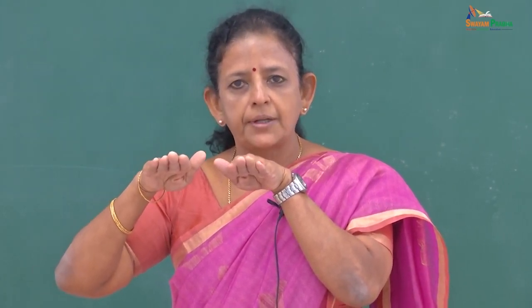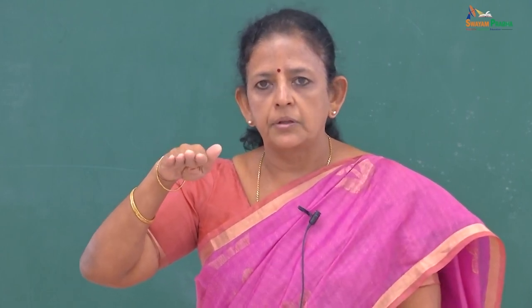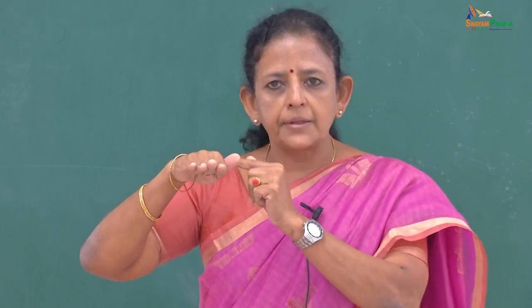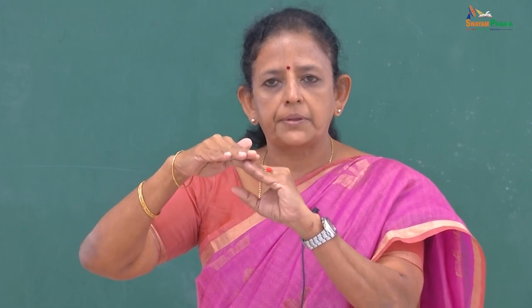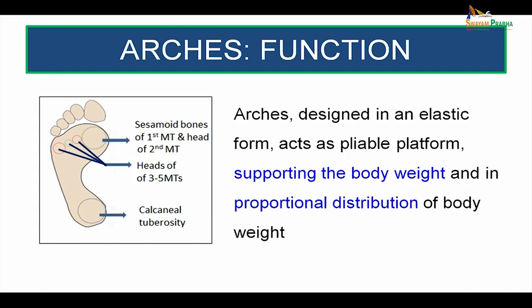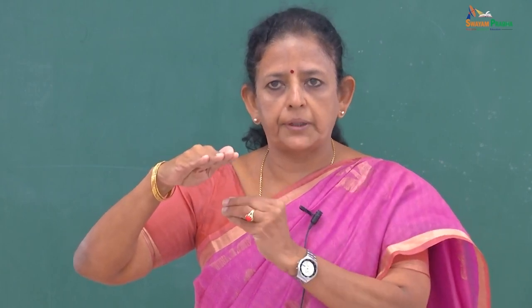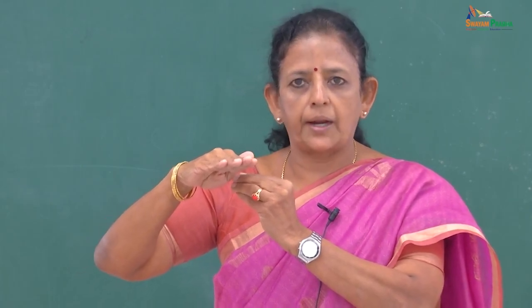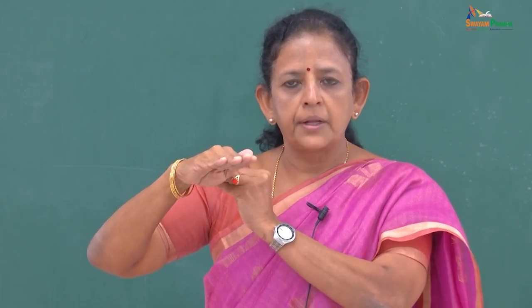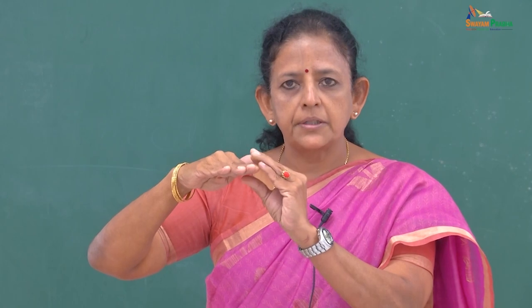The body weight is equally taken up by both feet, so each foot bears half the body weight. The body weight is transmitted vertically through the talus and distributed equally between the calcaneus on the posterior aspect and the metatarsals on the anterior aspect. The five metatarsal bones together have six bearing points, because the first metatarsal has two sesamoid bones which also take up the weight of the body.